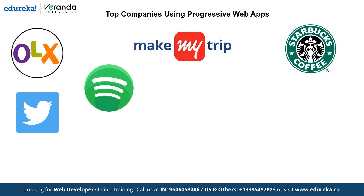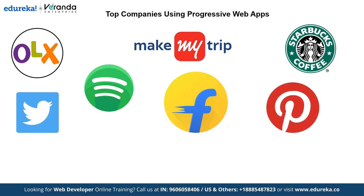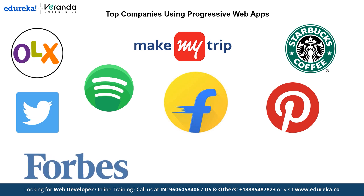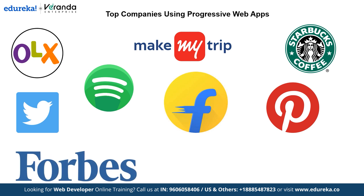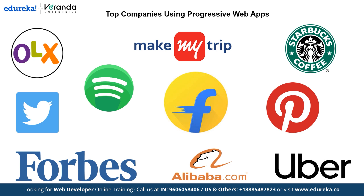Flipkart, one of the biggest e-commerce platforms globally, also uses progressive web apps to enhance speed and performance. Pinterest employs progressive web apps to provide a seamless experience across devices, ensuring smoother interaction for its users. Forbes, the renowned business magazine, has adopted progressive web apps to give readers a faster and more reliable browsing experience. Alibaba.com, a leading Chinese platform, uses progressive web apps to offer a seamless shopping experience. Finally, Uber, the ride-hailing giant, leverages progressive web apps to deliver customers a faster and more reliable experience. These are just a few examples of many companies using progressive web apps to provide a better user experience.